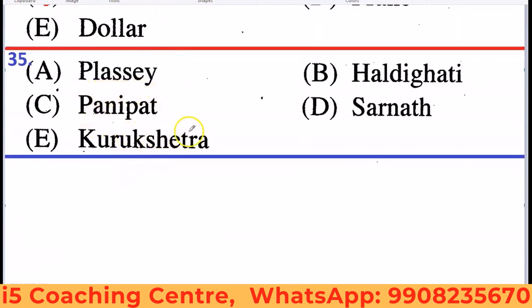Next: Plassey, Haldighati, Panipat, Sarnath, Kurukshetra. Sarnath is famous for Buddha's temple, while all others — Plassey, Haldighati, Panipat, Kurukshetra — are famous for battles. So Sarnath is the odd one out.